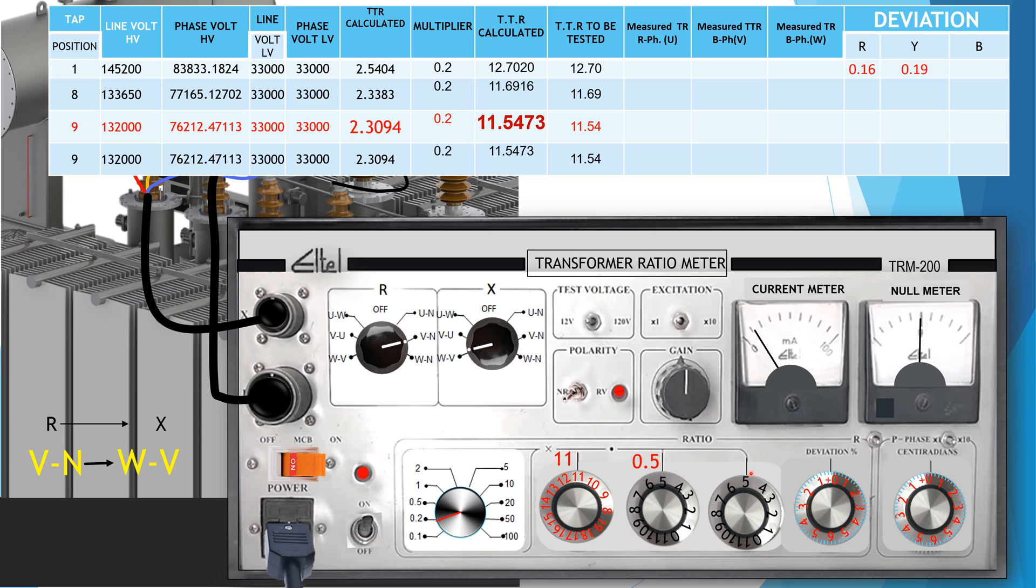Measured TTR of B-phase at tap position 9 is 11.55, that is 2.3105.